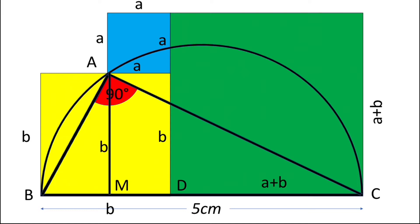What can we observe? MD will also be small a. So BM will be equal to b minus a, as BD is b and MD is a, so BM is b minus a.